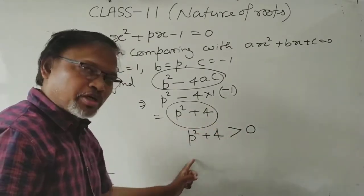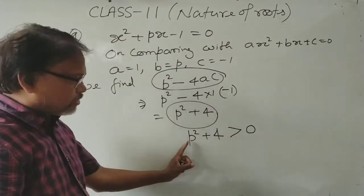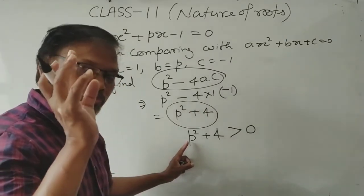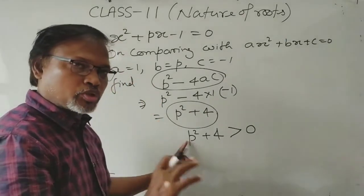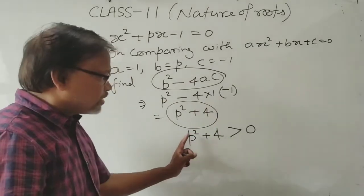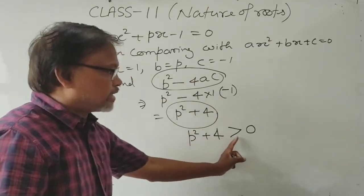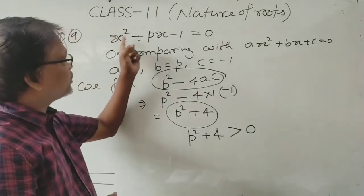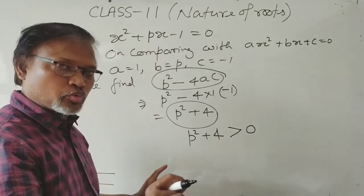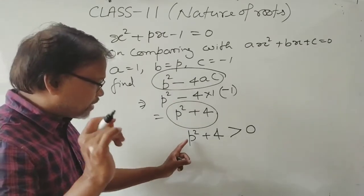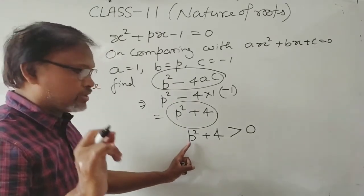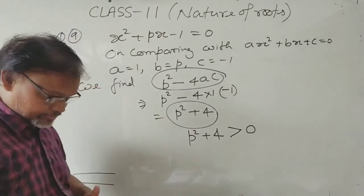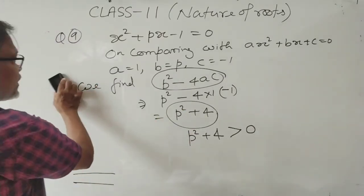Therefore, the equation has real and distinct roots for all values of p. This is what we needed to prove — that B² − 4AC is always greater than 0, hence the roots are always real and distinct. QED.